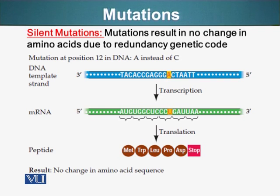We are going to talk about a specific type of mutation in detail in this module: point mutations. These mutations are changes of a single nucleotide base. Conversely, there are also changes in hereditary material at a much bigger scale — chromosomal mutations, which we talked about when we were studying genetics.